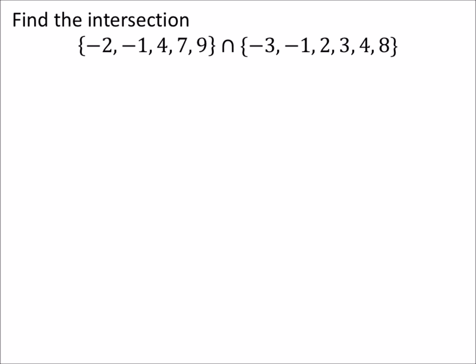So if we look at these in order, here's negative 2. There's no negative 2 in this other set, so that means negative 2 would not be part of the intersection.